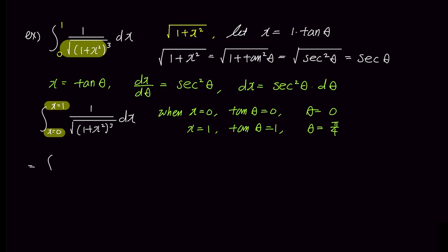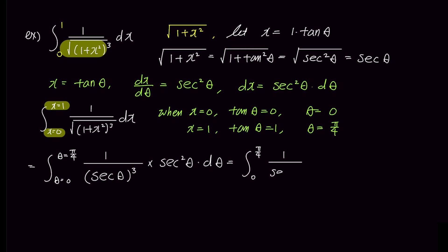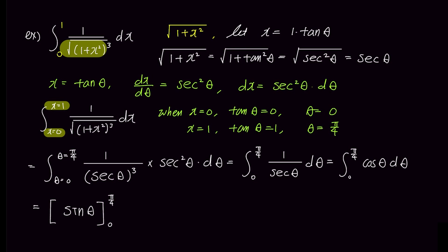Now let's substitute all x values with theta. When theta varies from 0 to pi over 4, the integral of 1 over secant cubed theta times secant squared theta simplifies to the integral of 1 over secant theta, which is equivalent to the integral of cosine theta. The integral of cosine theta is sine theta evaluated from 0 to pi over 4. Therefore, the answer is sine of pi over 4 minus sine of 0, which equals square root 2 over 2.